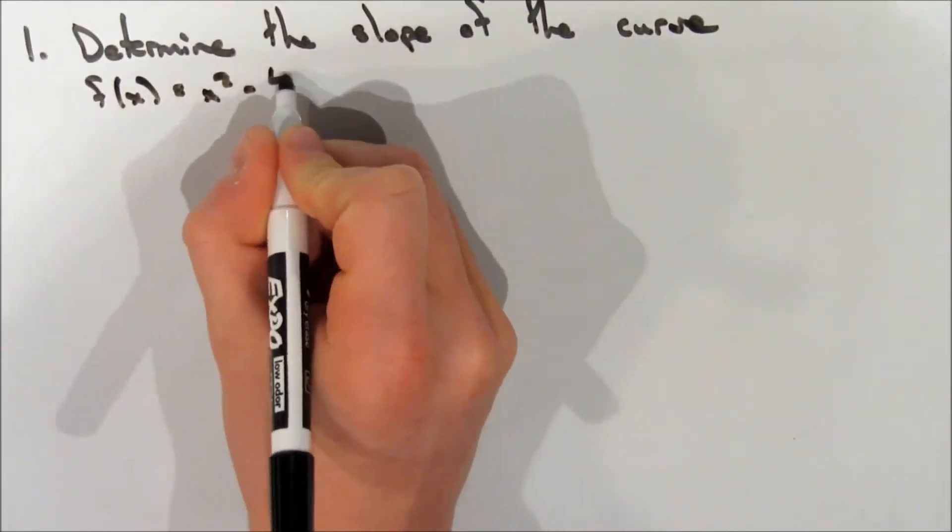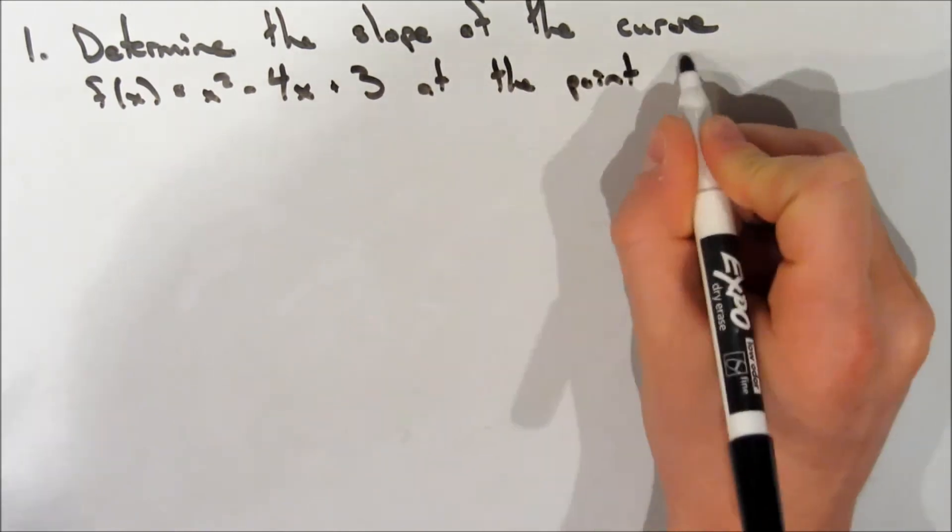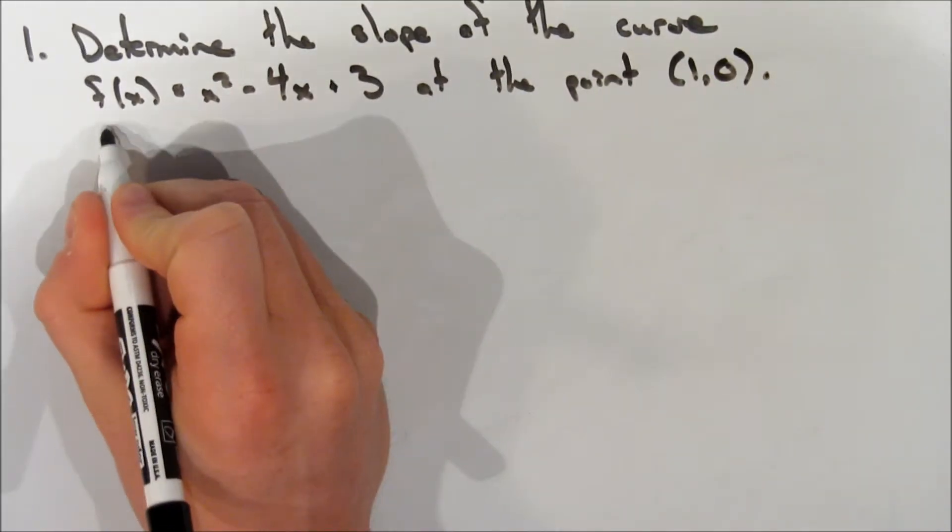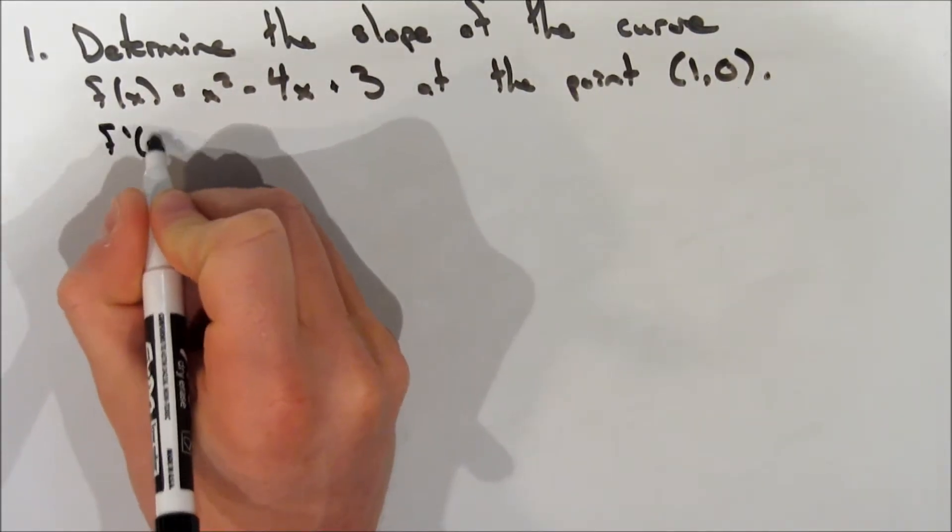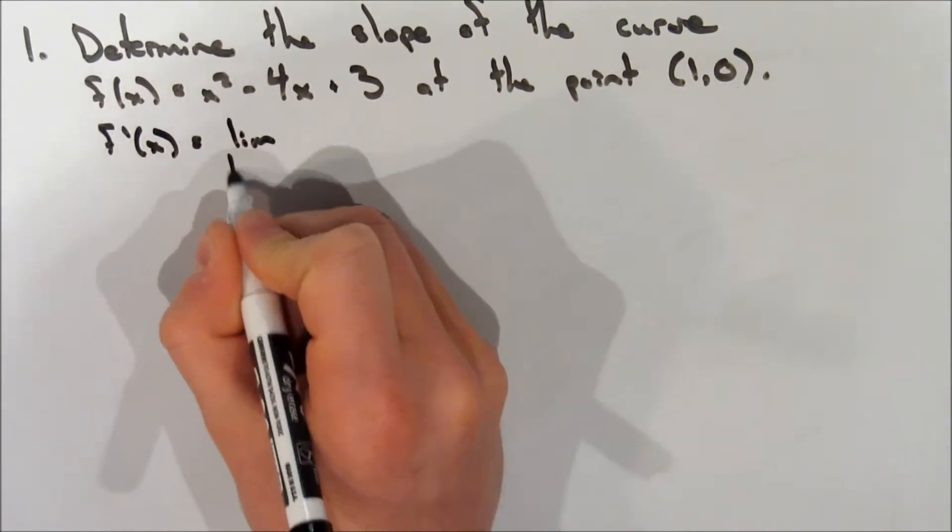We want to determine the slope of the curve f of x equals x squared minus 4x plus 3 at the point (1, 0). So first off, we want to find the slope of the curve at any point, so we're going to find the derivative.